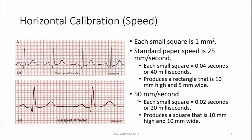The other speed is 50 millimeters per second. Each small square equals 0.02 seconds or 20 milliseconds, so each large square is 0.1 seconds or 100 milliseconds. This produces a square that is 10 millimeters high and 10 millimeters wide. Remember: if the paper is set to 50 millimeters per second, the heart rate appears half of what it should be and all ECG intervals appear twice as long as normal.